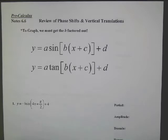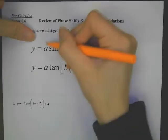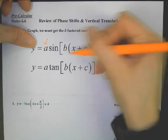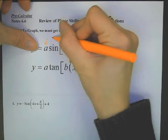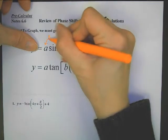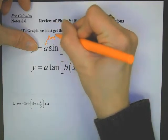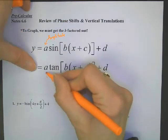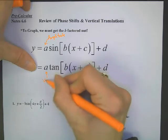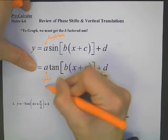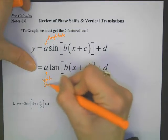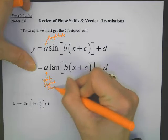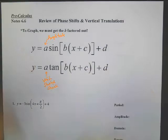So when we look at these, first of all, the A for sine, cosine, and the reciprocals means amplitude. But for tangent and cotangent, it means vertical stretch or shrink.